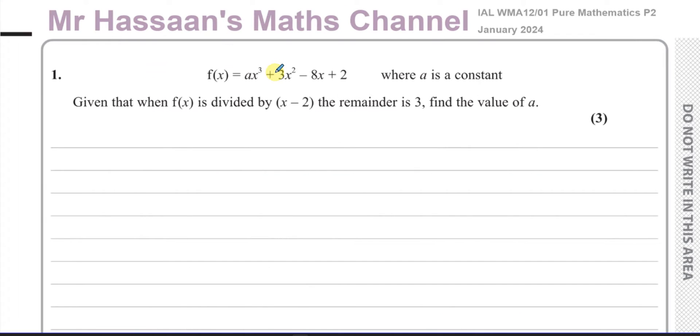I'm going to start with question number one, which looks like it's the remainder theorem. It says f(x) = ax³ + 3x² - 8x + 2, where a is a constant. Given that when f(x) is divided by x - 2, the remainder is 3, find the value of a.